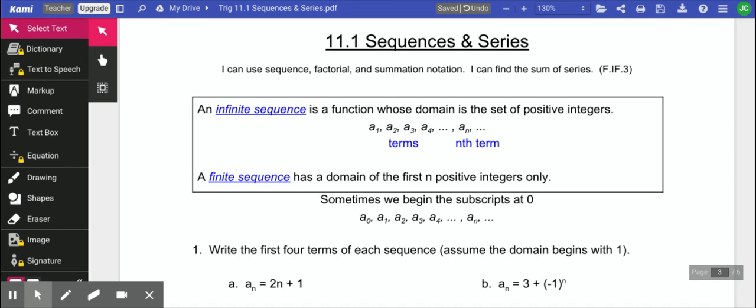A finite sequence has a domain that's only the first n positive integers. So a finite sequence means it's countable. It stops somewhere. So maybe it stops after 4 or after 10, whatever. But finite stops, infinite keeps going.